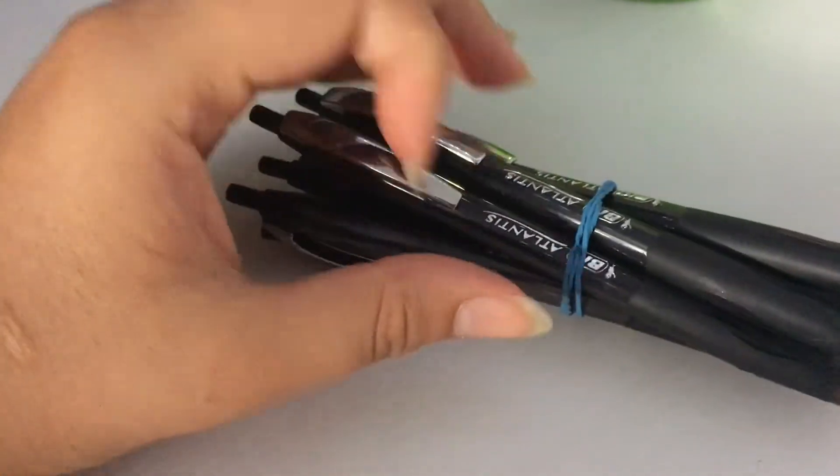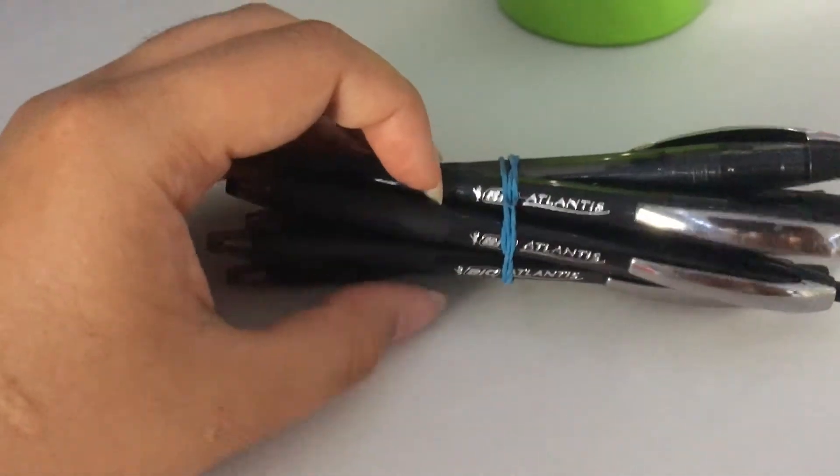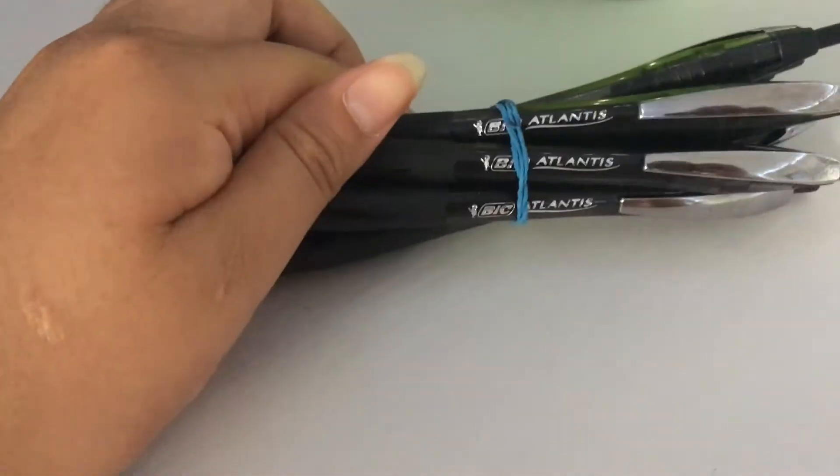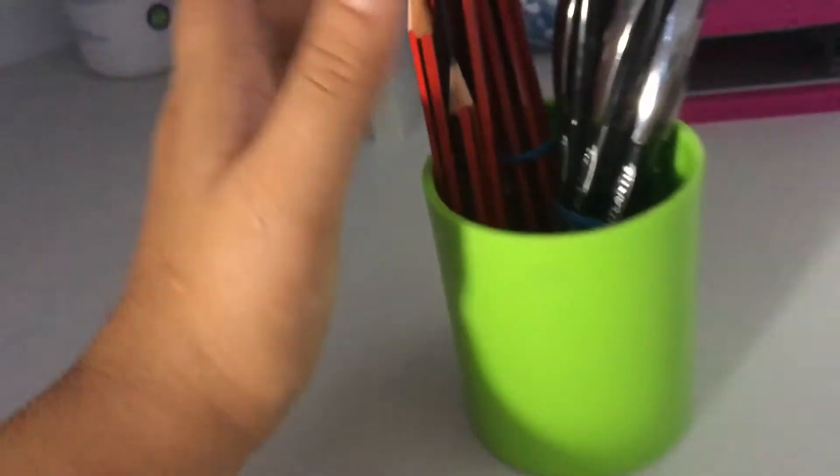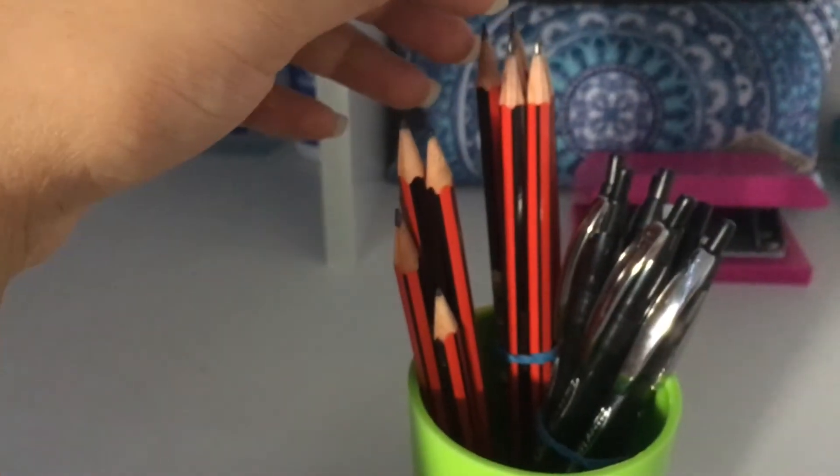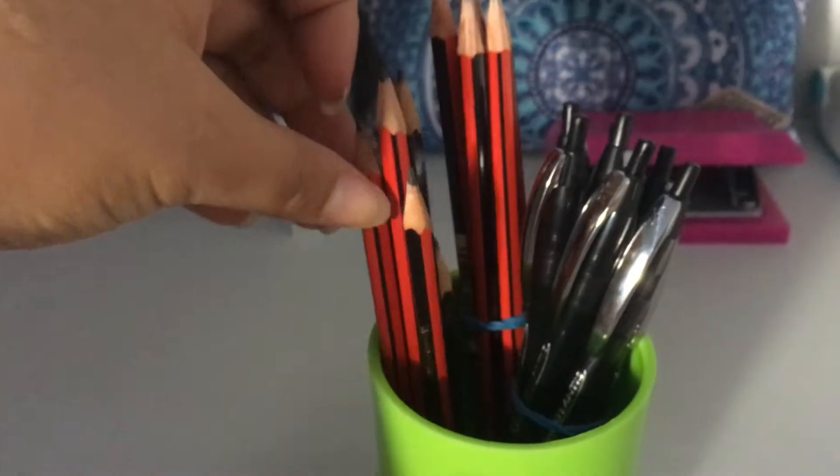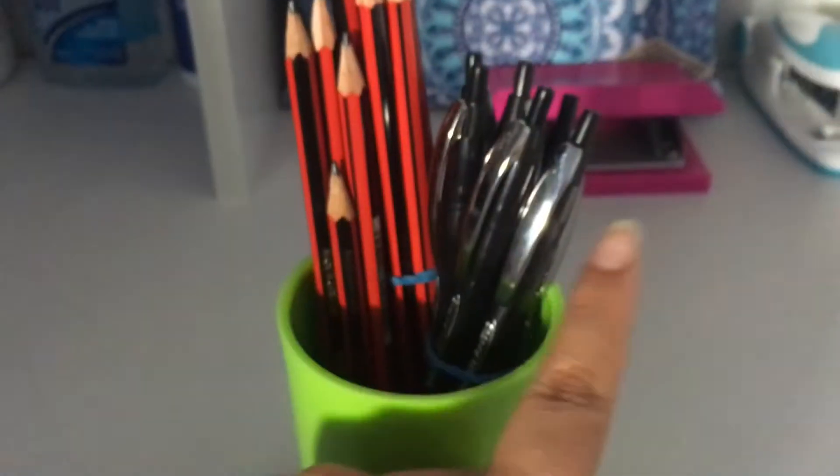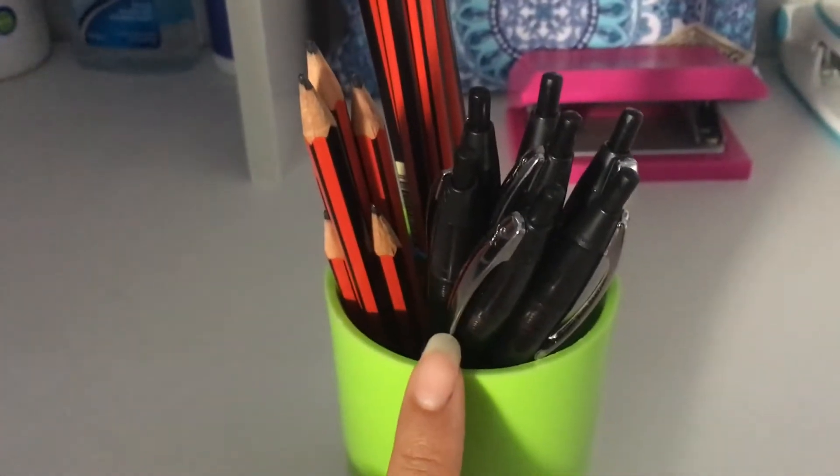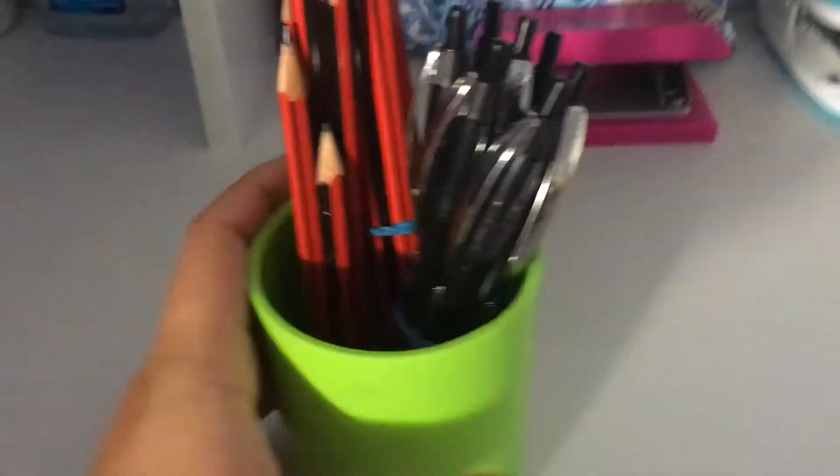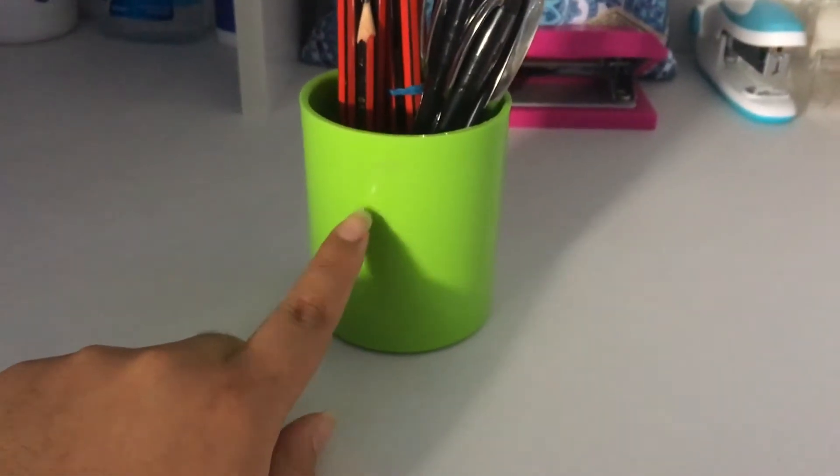These are my favorite pens - the Bic Atlantis pens. These write so smoothly and they're my absolute favorite. I got the pencils in a pack of 12 for about $6.50. These pens, I usually get in a pack of four for $4. This pen cup was also from Officeworks for about $5.